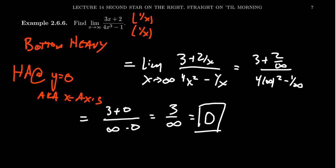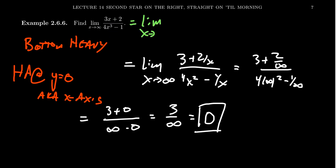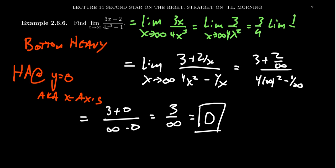For the second example, just look at the dominant terms: 3x on top and 4x cubed on bottom. The limit is the same as the limit as x approaches infinity of 3x over 4x cubed. As x goes to infinity, the other terms are minuscule in comparison. This simplifies to 3 over 4x squared. Since this is a reciprocal function, you can factor out 3/4 and take the limit of 1 over x squared, which gives 0.